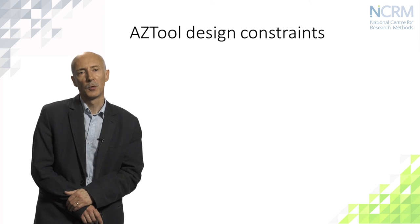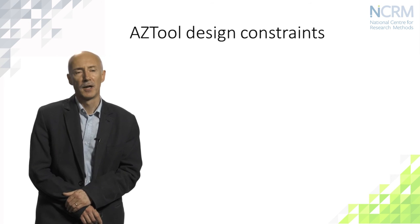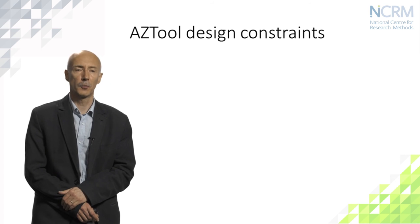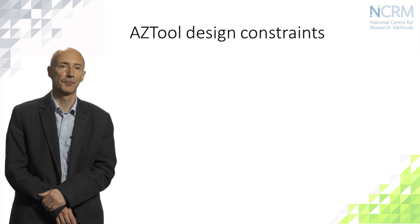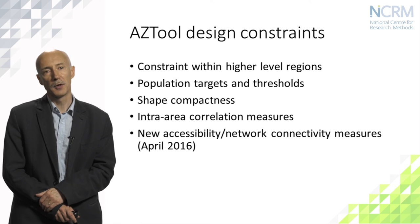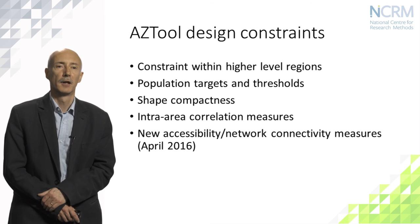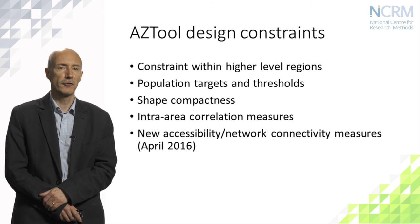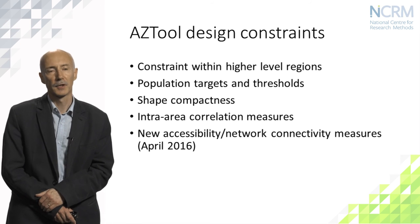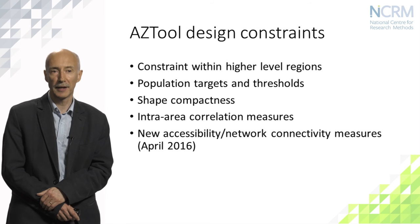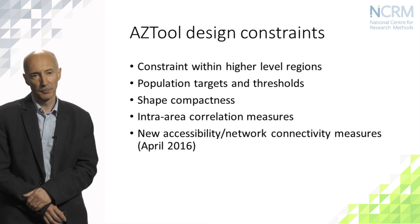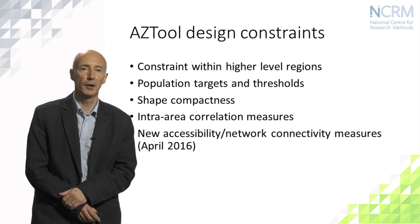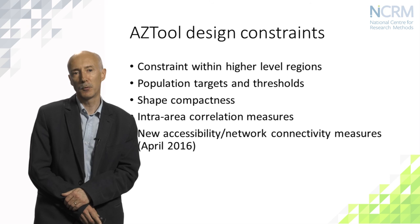AZTool can be used with a variety of design constraints. One of the features of successive versions has been that additional design constraints have become available, always described in the version notes. Currently available constraints include: regions for constraining zones within higher level areas, a variety of population target and threshold configurations, a standard shape compactness measure using a circularity index of perimeter squared over area, inter-area correlation measures for controlling homogeneity, and in the most recent versions, new accessibility and network connectivity measures.